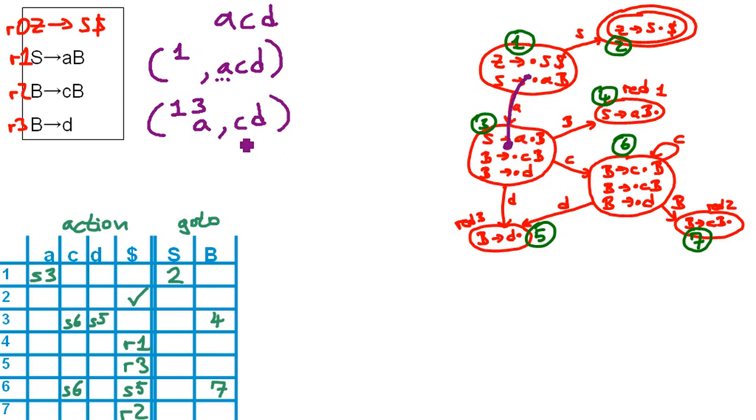Then we check out the next input is a C. We check out state number three. We're in this state and we have the input C. We have shift six. So just running the same, we shift the C and end up in state number six and write all the non-processed stuff on the right side. And we went to state number six.